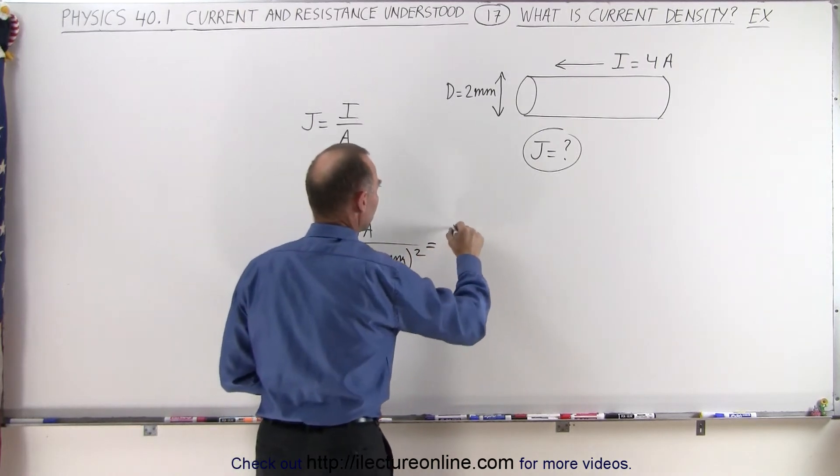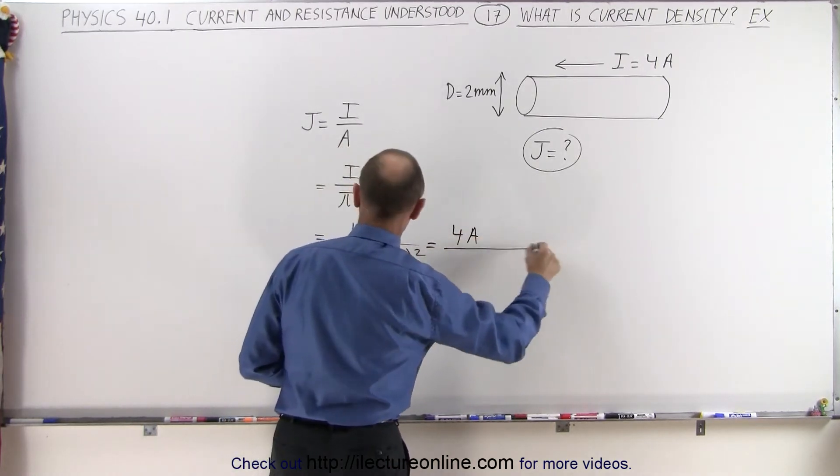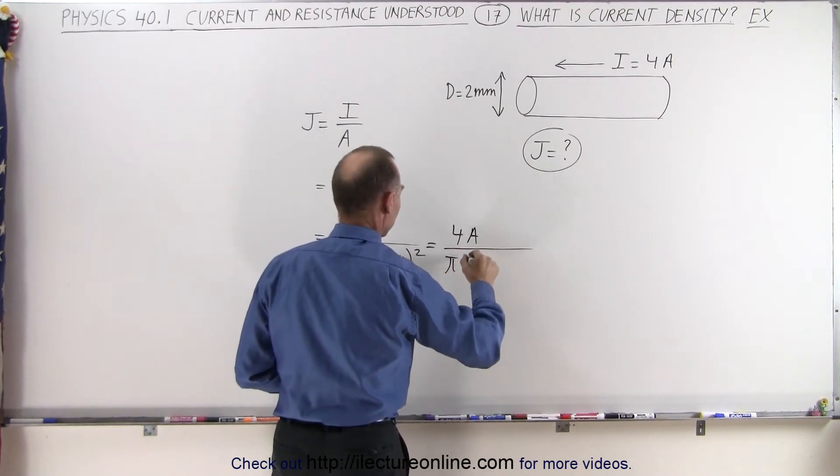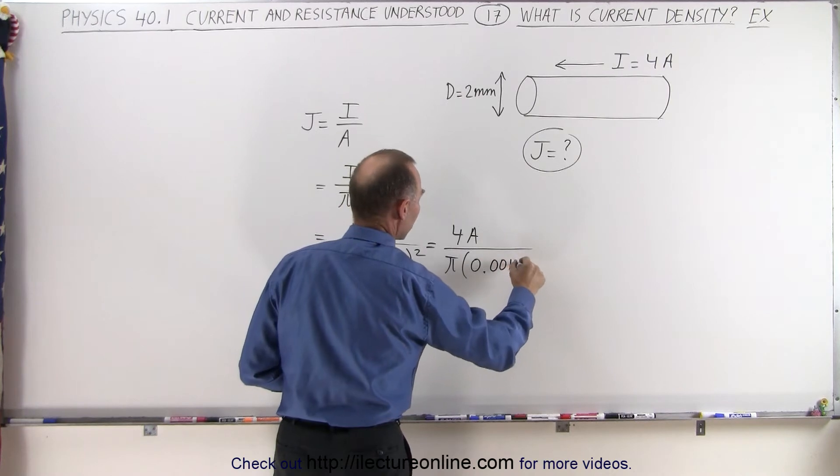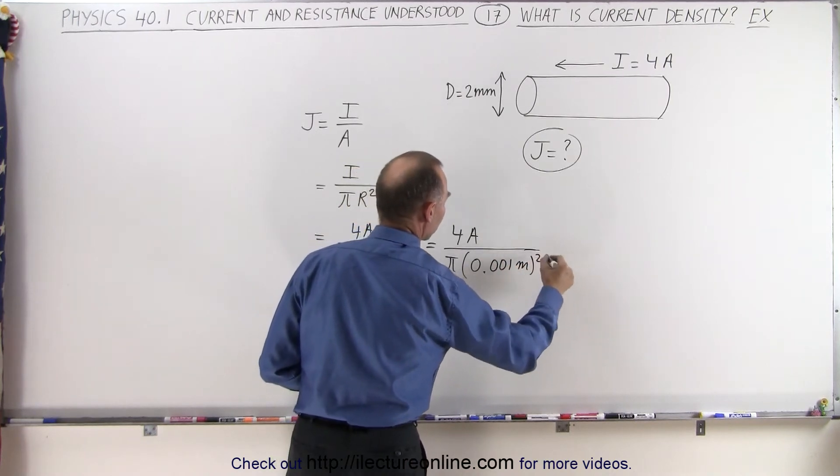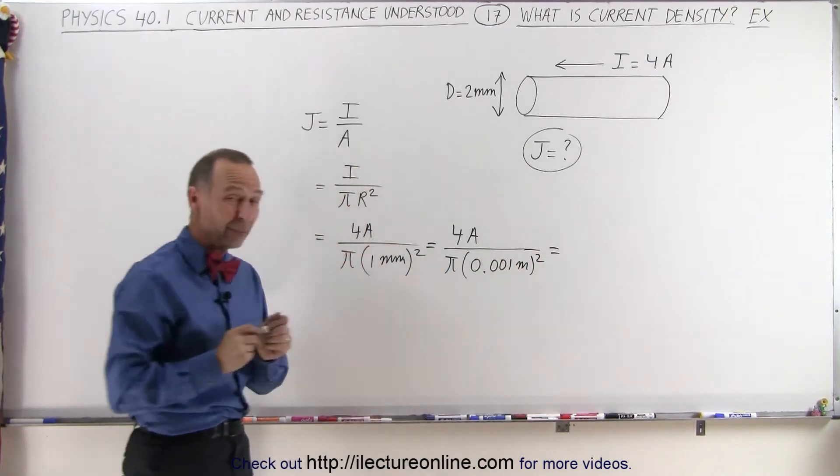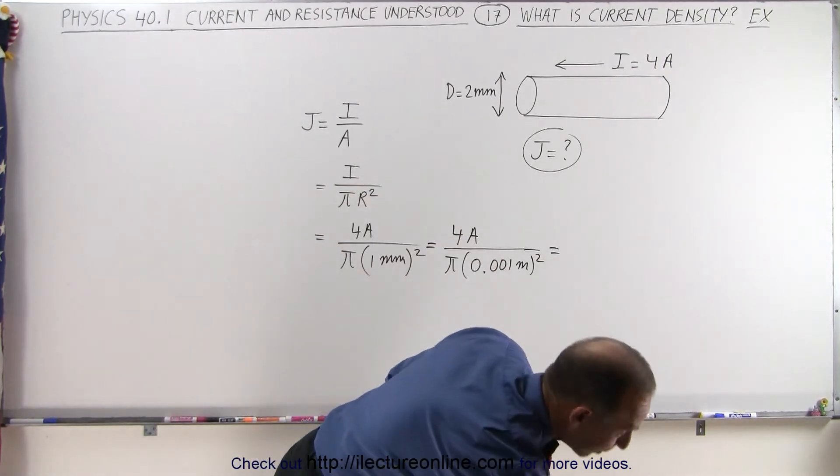So this would be equal to 4 amps divided by pi times 0.001 meters squared, because we want to convert that to meters. So let's see what we end up with in this particular case.